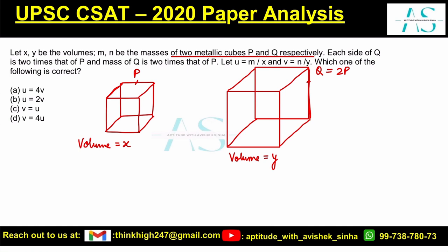What are the masses? The masses are m and n. The mass for P is m and the mass is n. Q is two times that of P, the mass is nothing but two times of m. N is nothing but two times of m. Now let's see what do we have as our question.